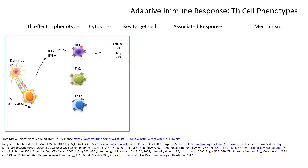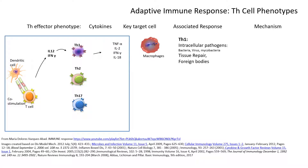These cytokines target a key effector cell: the macrophage. Macrophages are associated with a TH1 response — they are activated by TH1 cells and deal with intracellular pathogens, tissue repair, and foreign bodies. This is the most common inflammatory response dealing with different danger signals, including when we cut ourselves, when we have a burn, foreign bodies like a splinter, or intracellular pathogens.